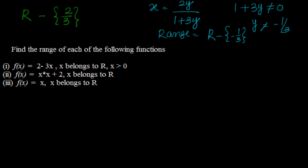Next: find the range of the following functions. f(x) = 2 - 3x, with domain x belongs to R and x > 0. If x is 0.001 or something very small, this whole term is negligible and you get almost 2. So 2 is a boundary but it is excluded because x is strictly greater than 0.